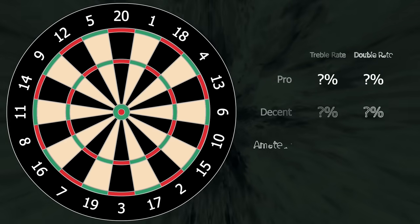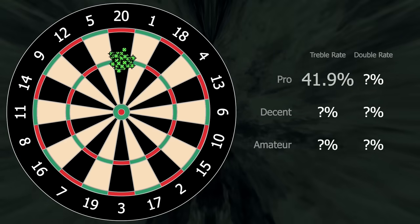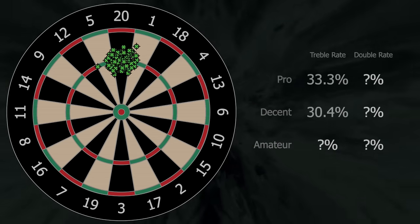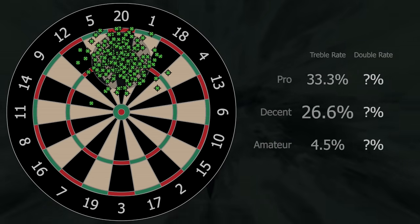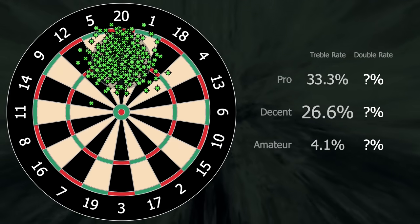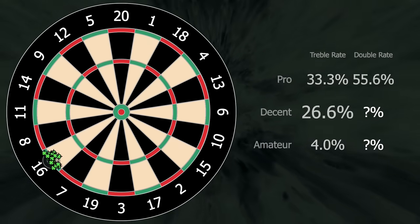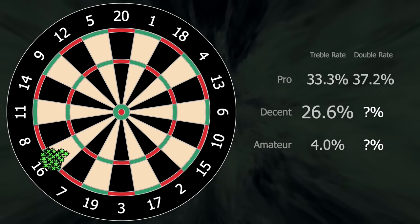If we let the three skill levels throw a few darts at the treble 20, we can then calculate the percentage of accurate throws. So a pro player will hit the treble 20 about 35% of the time, a decent player about 23%, and an amateur player only hits one out of every 20 darts.